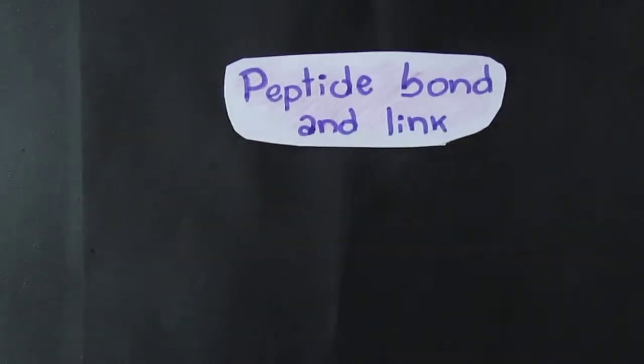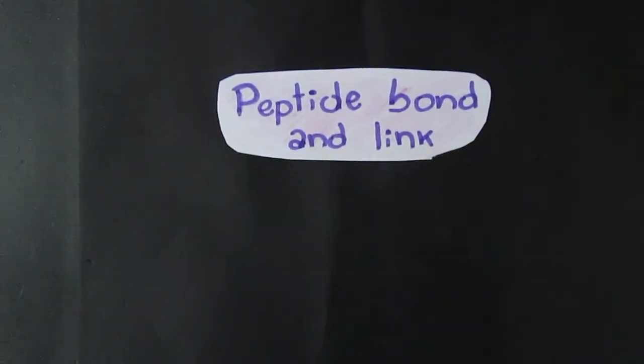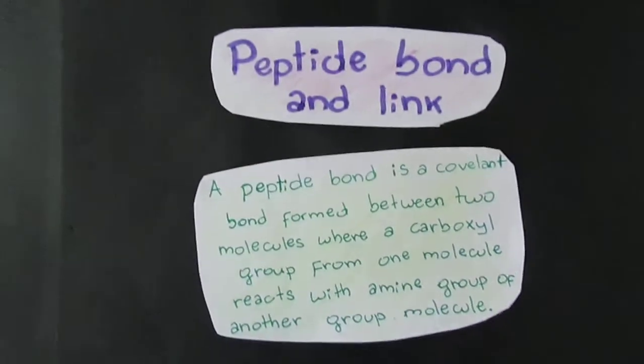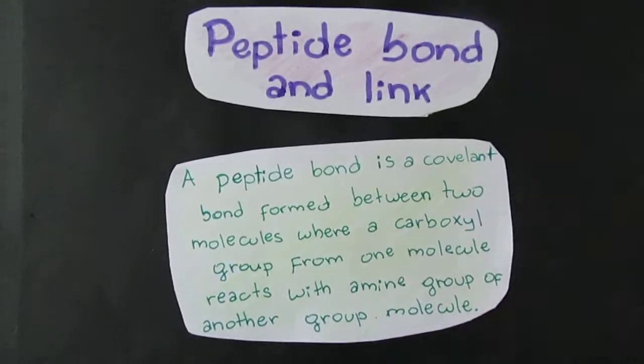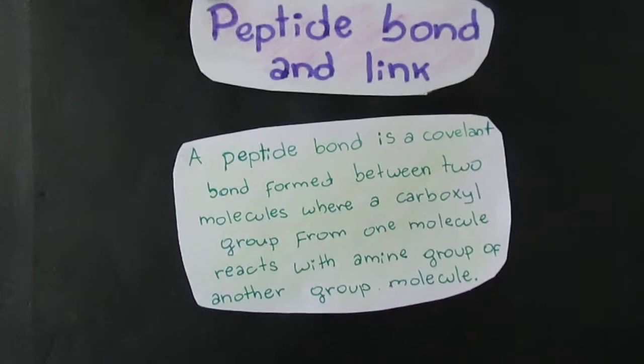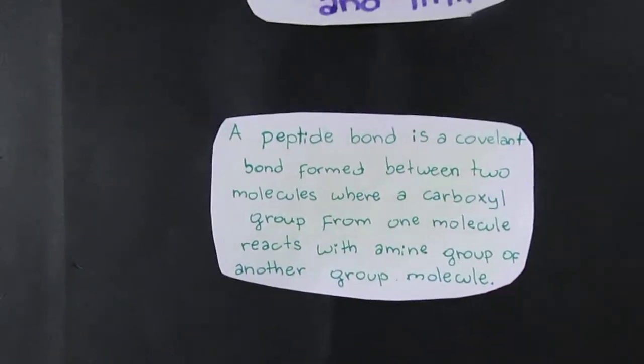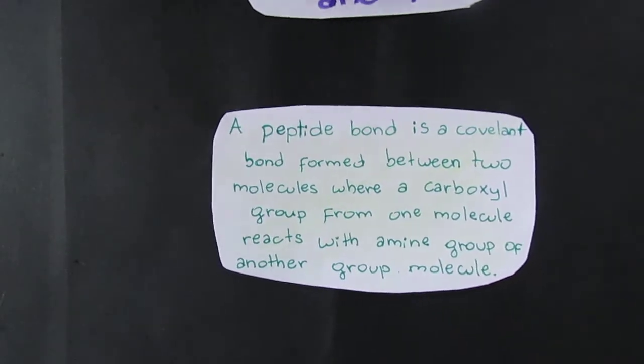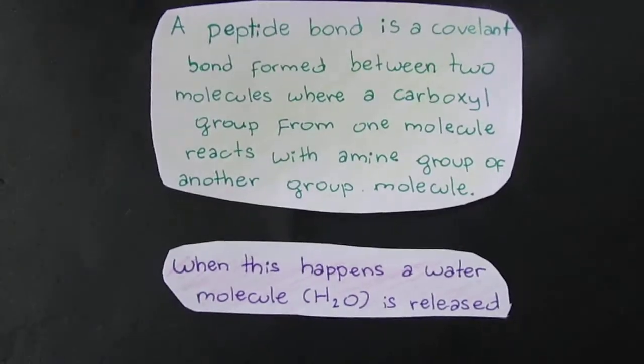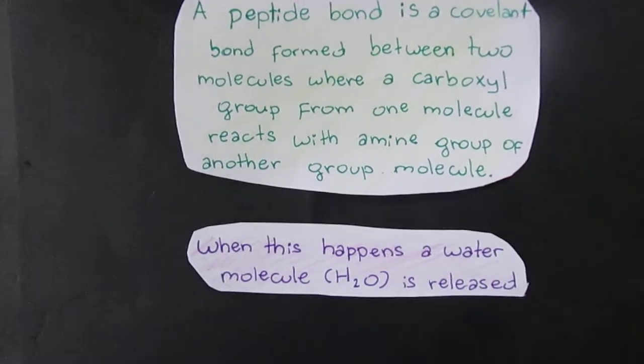Peptide bond and linkage. A peptide bond is a covalent bond formed between two molecules where a carboxyl group from one molecule reacts with an amine group of another molecule. When this happens, a molecule of water, or H2O, is released.